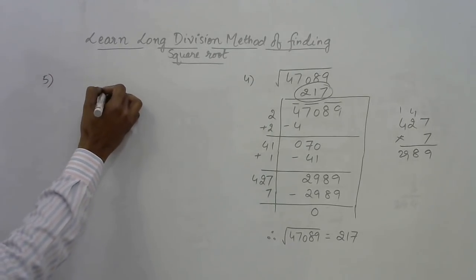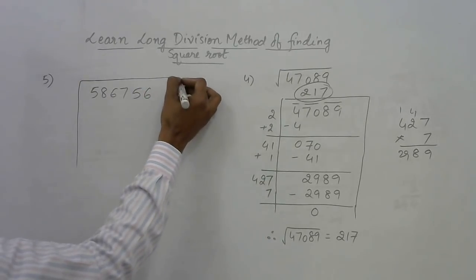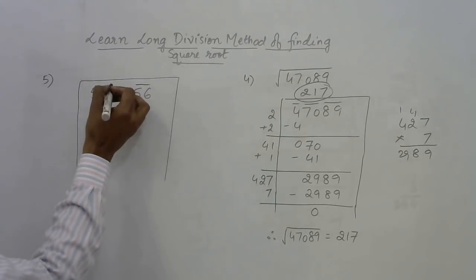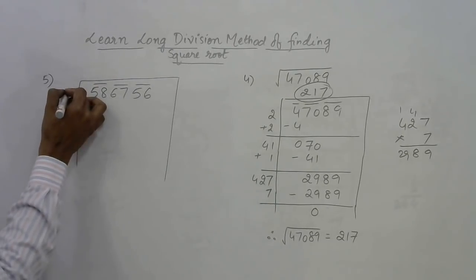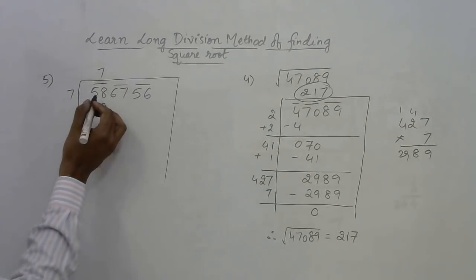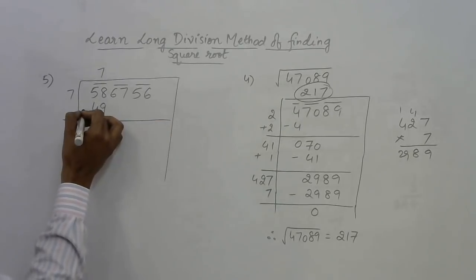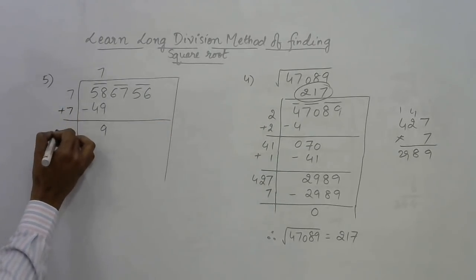We have 586756. Let us make pairs from the right hand side: 56, 67, and 58. Now we need to have a number whose product with itself gives you a number just less than 58. 7 sevens are 49, because 8 eights are 64 is more than 58. Subtract here, you get 9. Add here, you get 14.